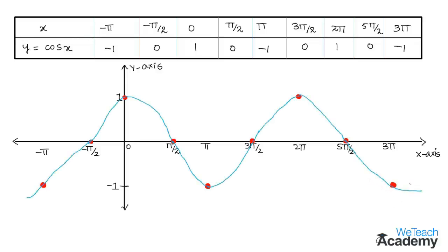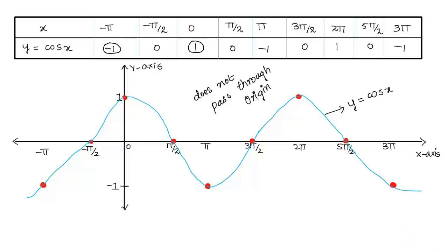Note a few key properties: the graph of cos x is a continuous curve. The minimum value of cos x is minus 1 and the maximum value is 1. The curve of cos x does not pass through the origin, and the curve repeats with an interval of 2 pi.